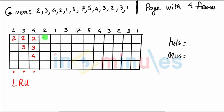Next there is a hit because 2 already exists. Next 1 causes a miss, so 1 enters: 2, 3, 4, 1. Next is 3, which is a hit, so we have 2, 3, 4, 1.